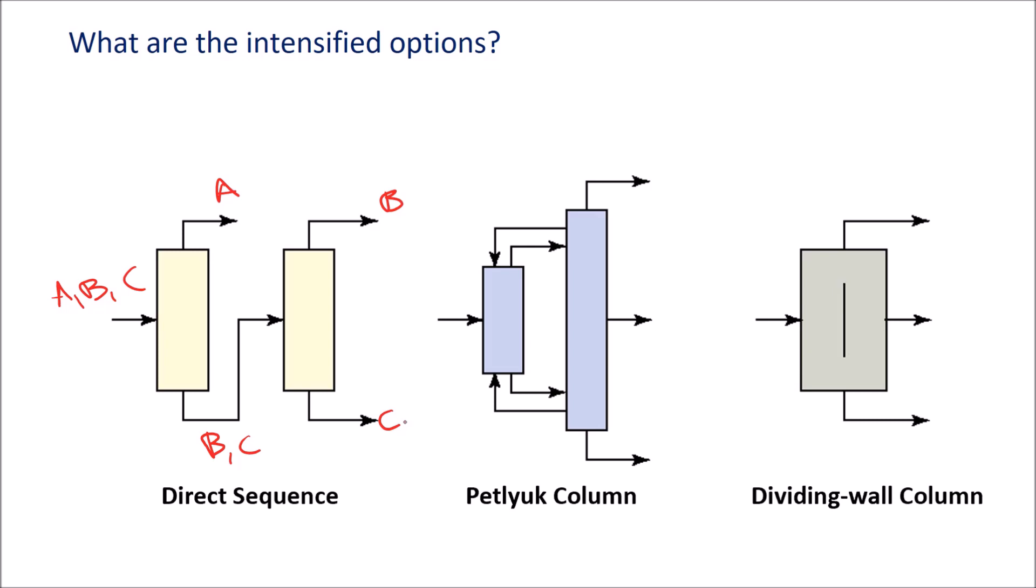An alternative to that is what's called a Petlyuk column, where we'll have the same mixture A, B, and C coming in. We use a pre-fractionator, which I'll just label P. We don't really try and get a very clean, very high purity separation of A, but rather we have a mixture of A and B here. And then at the bottom, we have some B with also some C, primarily C, but with some B coming out of the bottom of that pre-fractionator. And when we do this, we're able to get that very clean, crisp separation of the three components in a way that's more thermodynamically efficient.